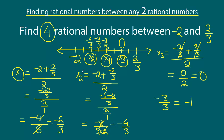So these are our four rational numbers between minus two and two over three. I want to highlight one point: there are an infinite number of rational numbers between any two given rational numbers. So if you get a different set of rational numbers between minus two and two over three, that would be fine as well. Since we are using the average method, you should have the first three numbers the same, but for the last one, it depends on which two consecutive rational numbers you choose, and accordingly you will get a different average.